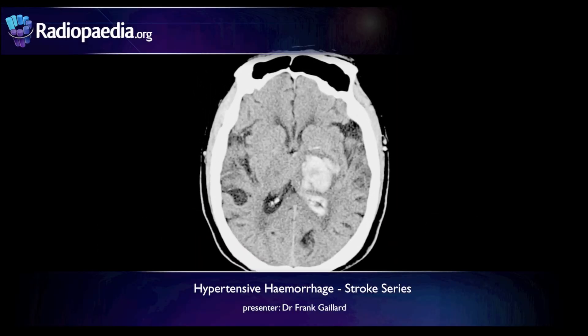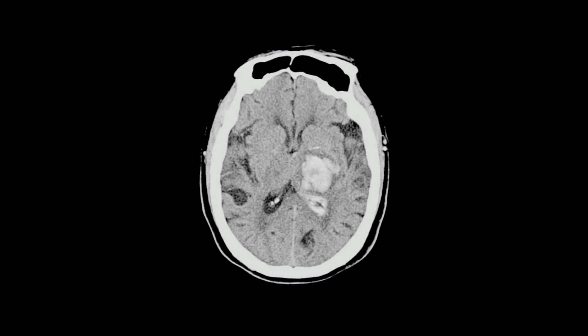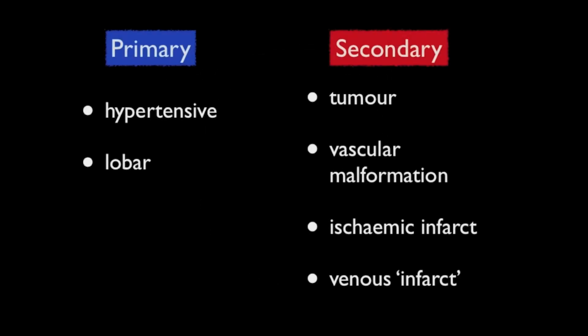Hello, this is Frank Gaylord from radiopaedia.org, and today we're going to talk about hypertensive hemorrhages. Intracranial hemorrhages have traditionally been divided into primary and secondary, with primary hemorrhages being further subdivided into those due to chronic poorly controlled hypertension and lobar hemorrhages.